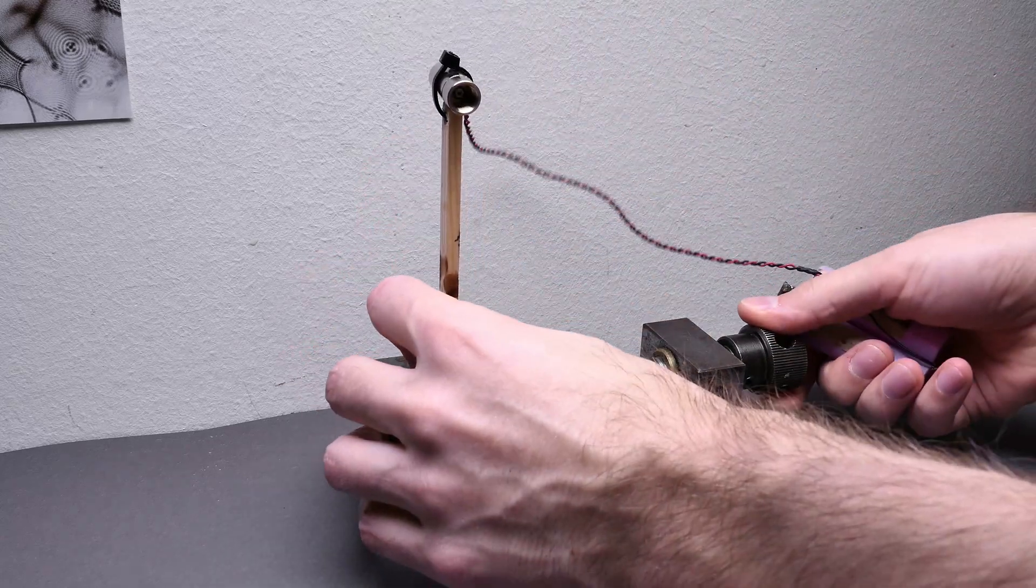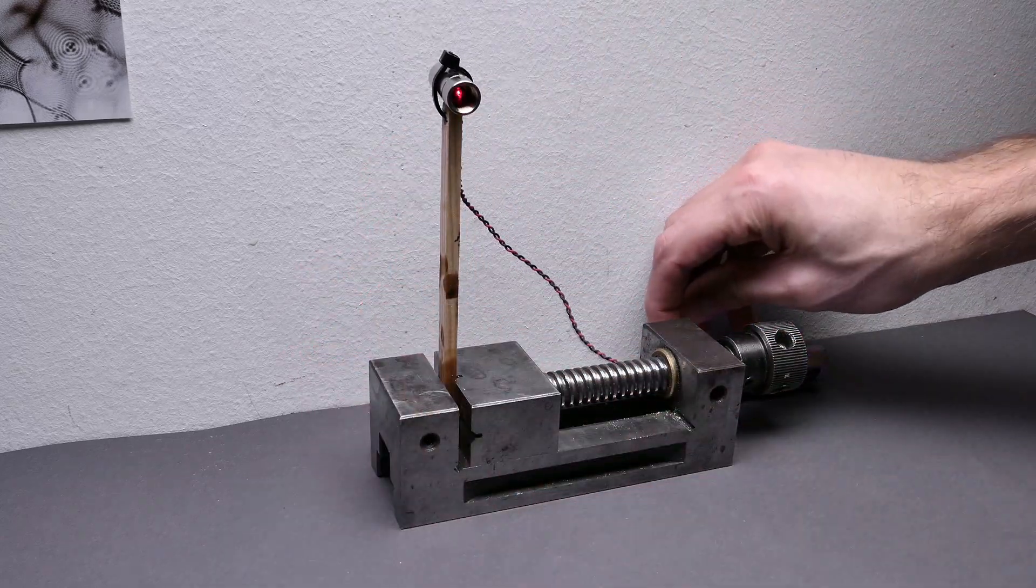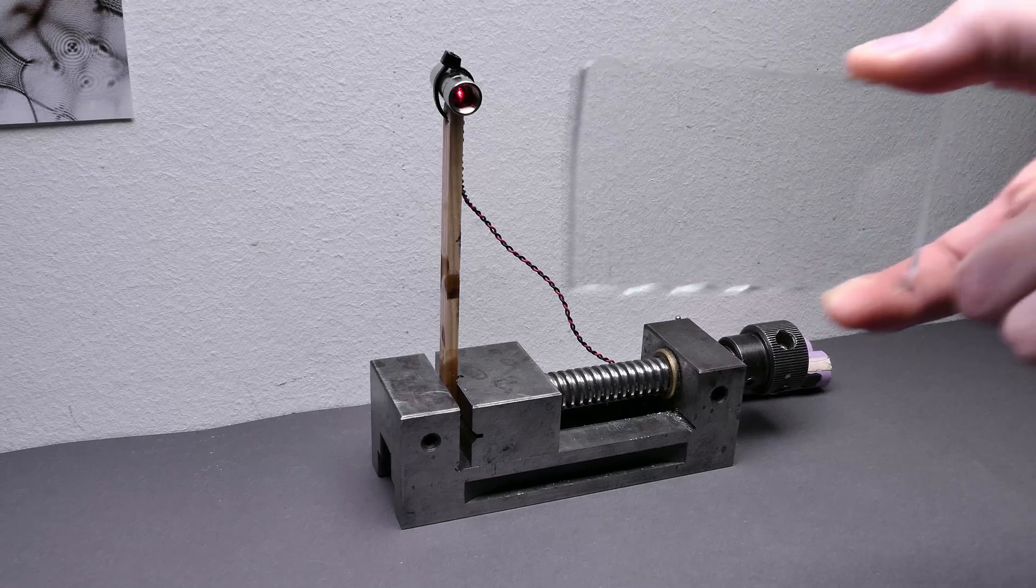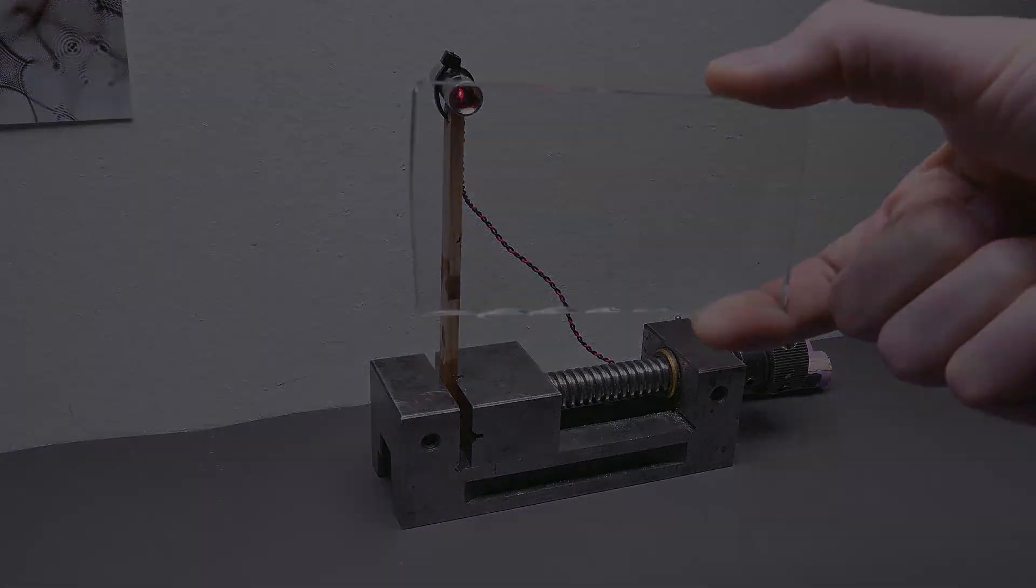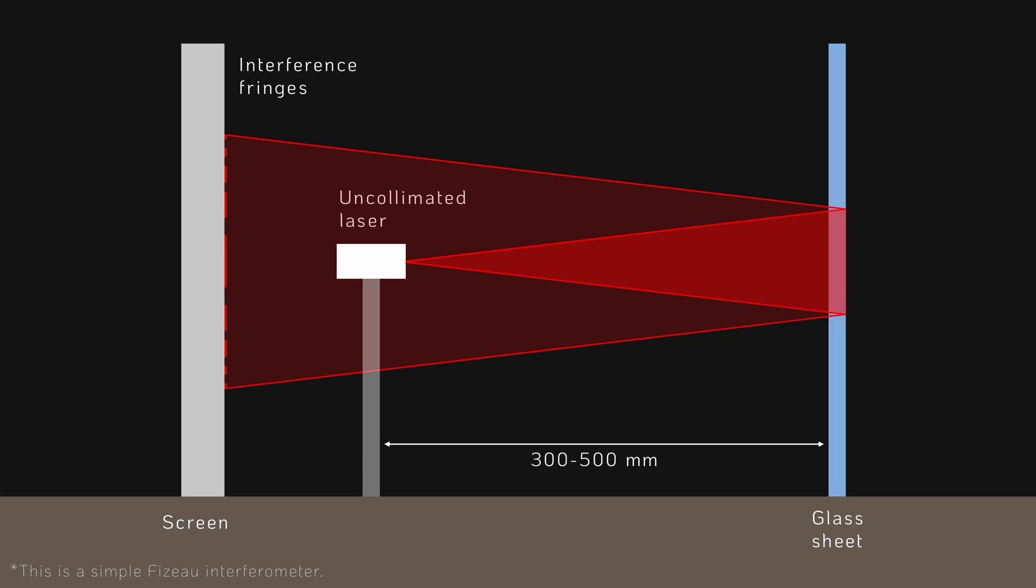Now I'm ready to test it. The setup uses interference between the front and back surface of the tested glass sheet to visualize variations in thickness.